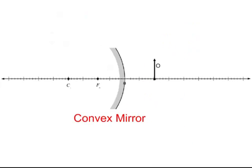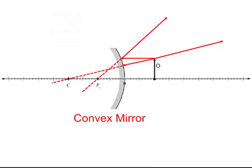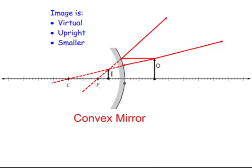For a convex mirror, the focal length is on the other side. We draw one ray through the center that reflects right back, and one parallel ray that reflects at the angle of the focal length. They don't meet on the right-hand side, so we draw dotted lines — the image is smaller, virtual, and always upright regardless of object position. The convex mirror and diverging lens give the exact same type of result. This is the mirror on your car's rearview — that's why it says objects may be closer than they appear, because you see a virtual, smaller, upright image.